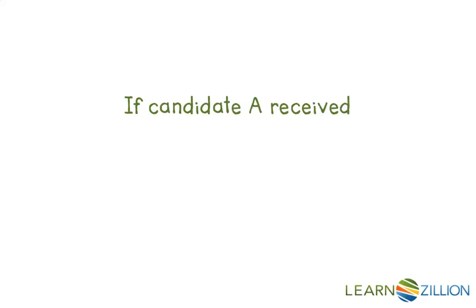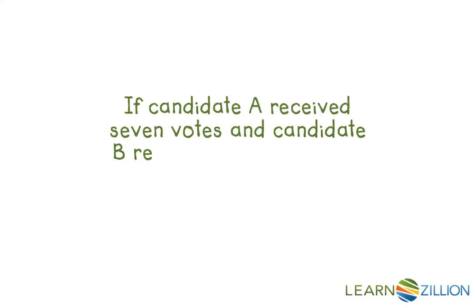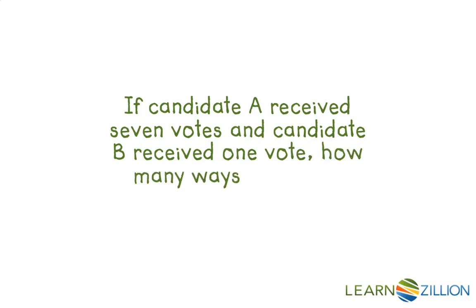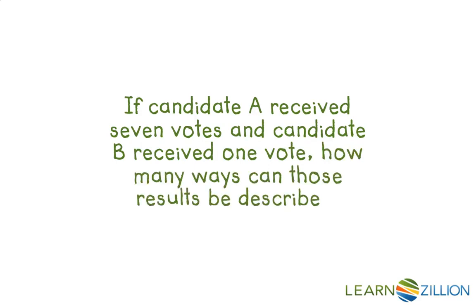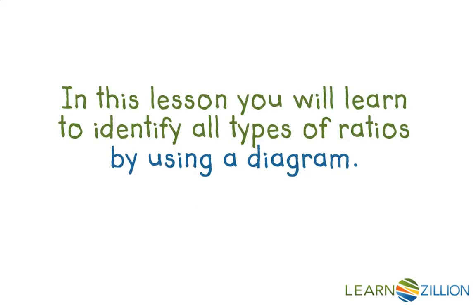If candidate A received 7 votes and candidate B received 1 vote, how many ways can those results be described? In this lesson you will learn to identify all types of ratios by using a diagram.